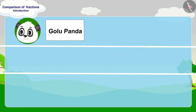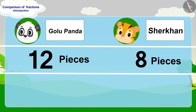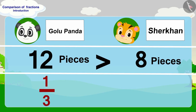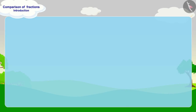Golu has written his name on twelve pieces and Shere Khan has written his name on eight pieces of paper. Therefore, Golu has written his name on more pieces of paper than Shere Khan. We can also see it this way: the fraction one third is bigger than two ninths.